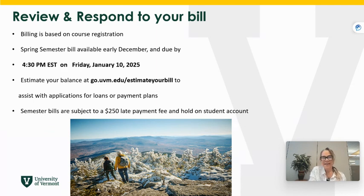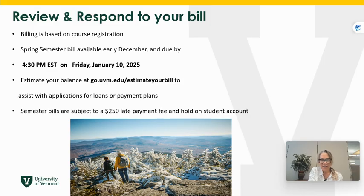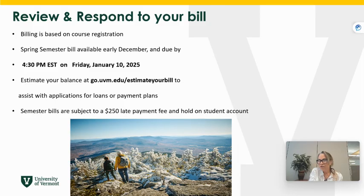The second important thing is to understand how to review your bill, respond to your bill, and understand your financial aid. Your spring semester bill is available in early December and it is due by 4:30 on Friday, January 10th. You want to make sure that you understand everything that you need to do prior to Friday, January 10th. You can estimate your bill with a link that we provide, which can help you if you are doing this well ahead of time with your loans or payment plans. Semester bills are subject to a $250 late fee each semester and a hold on your account. So to avoid all of that, just make sure that you are getting started well ahead of time. Your proxy can help you understand it all and put it all in place well ahead of that bill due date.